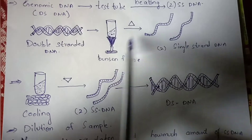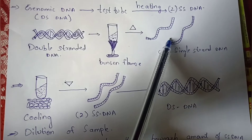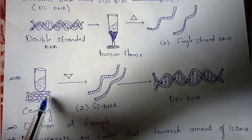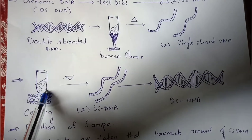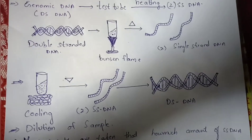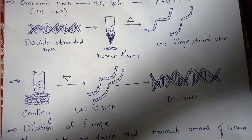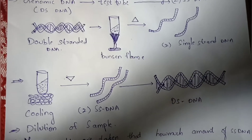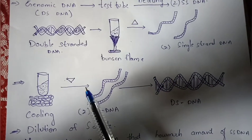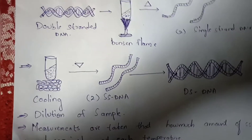The second point: due to heating, the double-stranded DNA gets converted into single-stranded DNA. When the test tube then undergoes cooling, the single-stranded DNA present in the test tube gets converted back into double-stranded DNA due to the cooling. This process also occurs inside the test tube.